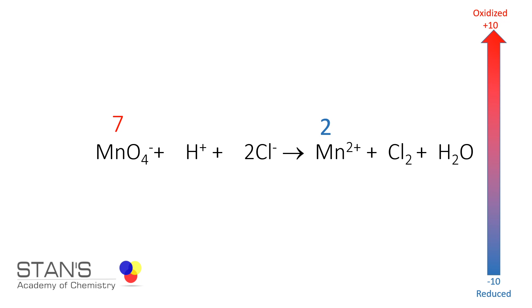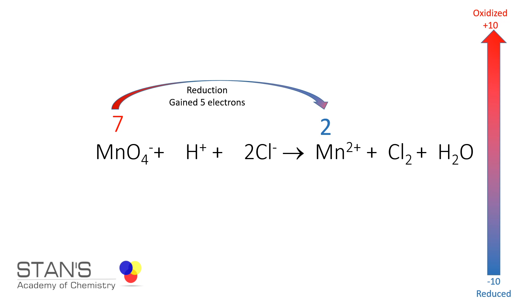The oxidation number of Mn²⁺ on the product side is plus two, so there is a decrease in oxidation number — the process is reduction. Manganese in permanganate ion is reduced to Mn²⁺, and for this to happen five moles of electrons have to be gained.